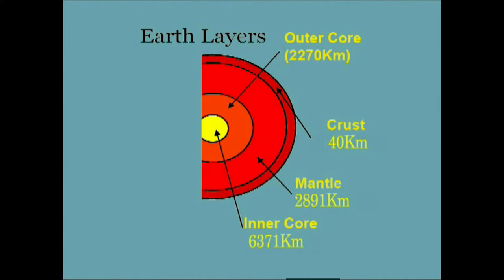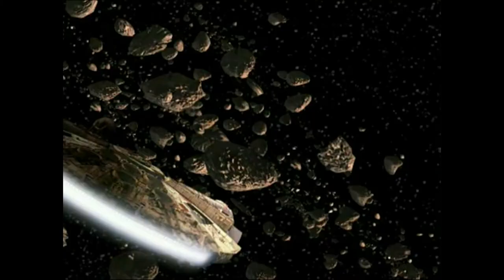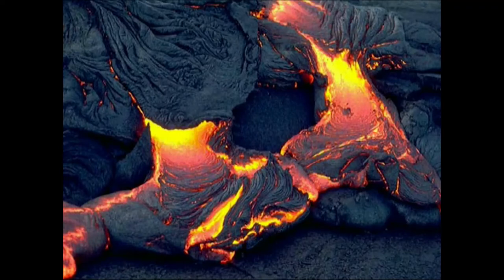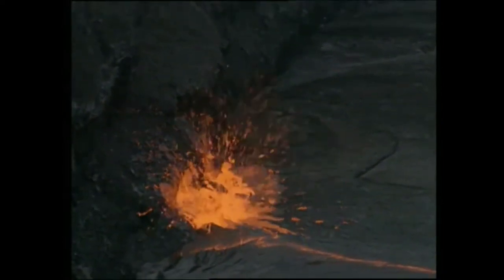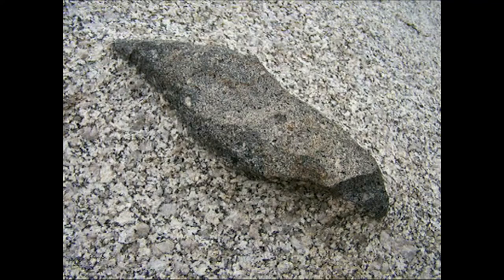Whatever little we know about the mantle is from the study of earthquake waves — how their velocities change within it — and comparison with extraterrestrial objects, that is meteorites. We also have certain access to directly observe rocks brought from the depth of the mantle to the surface. When a magma, which is a silicate melt generated at depth, rises to the surface, it can pick up a few un-melted fragments of mantle, called xenoliths, and bring them to the surface.